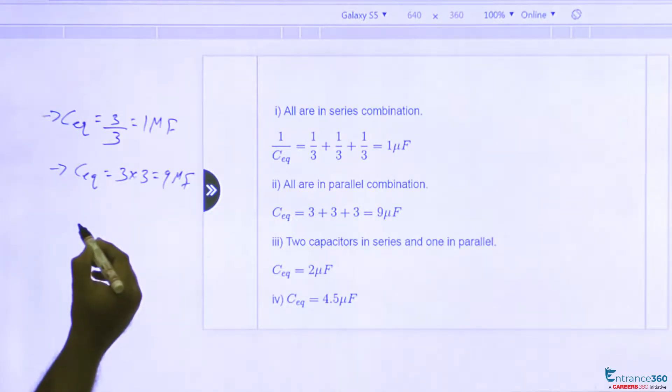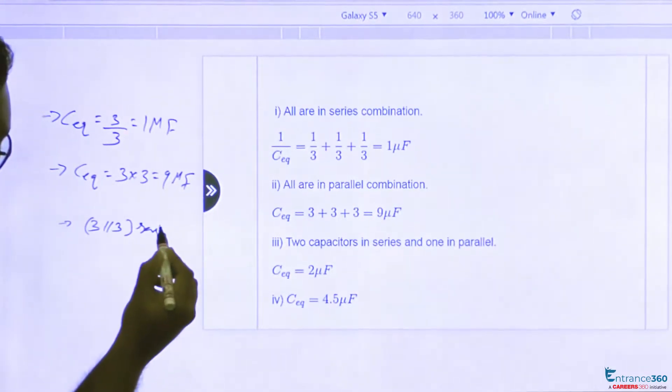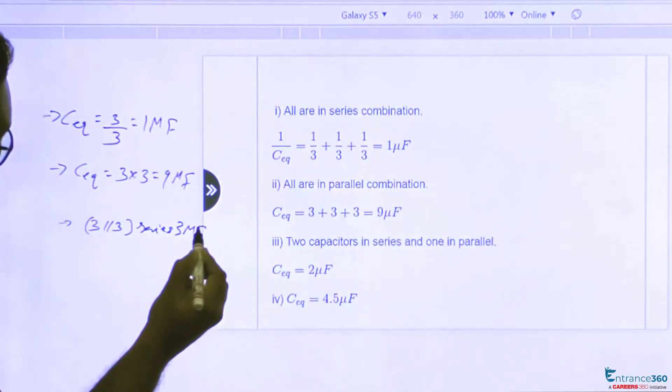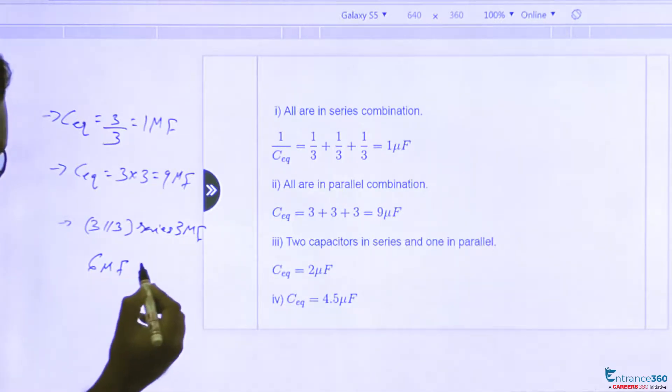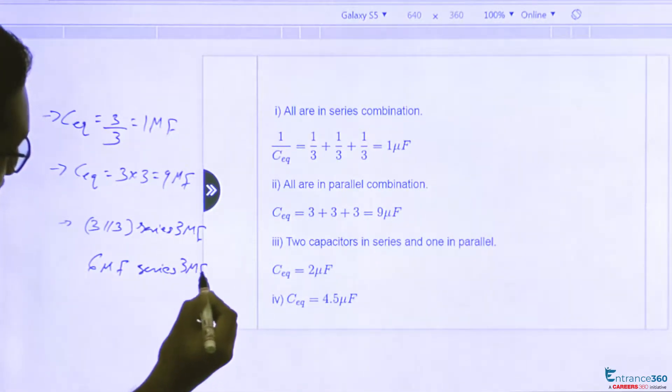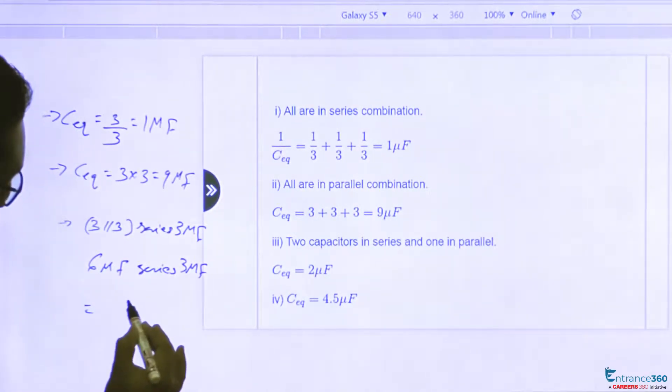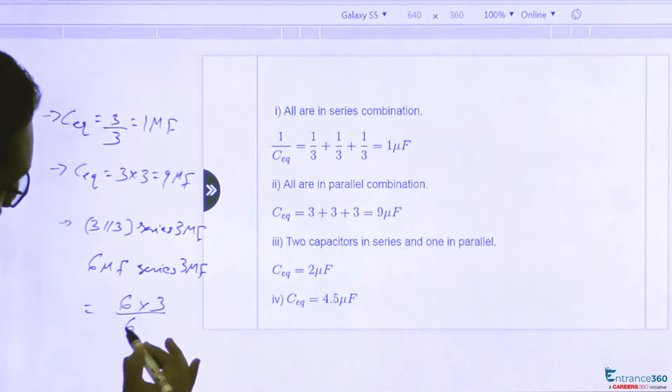If two capacitances are connected in parallel and one is connected in series, if we connect 3 and 3 in parallel, which is in series with another 3 μF capacitance, 3 and 3 in parallel will give 6 μF, which is in series with 3 μF capacitance. So the net capacitance will be 6 times 3 divided by 6 plus 3.